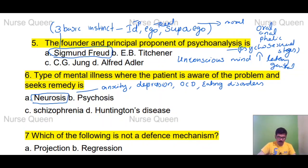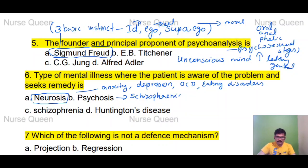In neurosis, the patient is aware of the condition. If you look at psychosis, psychotic conditions include schizophrenia, mania, etc. In psychosis, if we look at the mental status examination, the patient is not aware of the psychotic features.